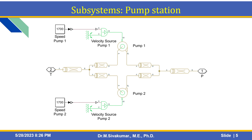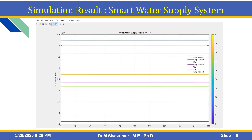There are three pump stations and four tank stations. After modeling and designing this smart water supply system, you can obtain simulation output results using SimScape Logging. You can see pump station 2, pump station 3 — at heights of 40 meters, 45 meters, and 60 meters — along with pump station outputs showing the pressure values.